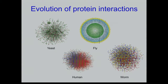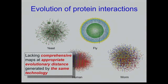Looking at the evolution of protein interactions and networks is not a new problem. For about 10 years now, we have had networks in yeast, fly, human, and worm, and people have been trying to do comparative analysis. But success has been very limited — surprisingly — because overlaps are very sparse. One of the first papers in Nature Genetics found only 16 interactions shared between the four species, so you cannot do statistics with only 16 pairs.